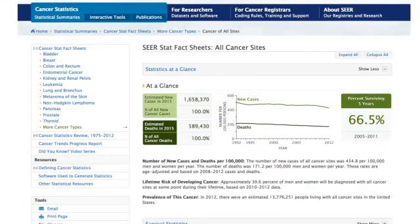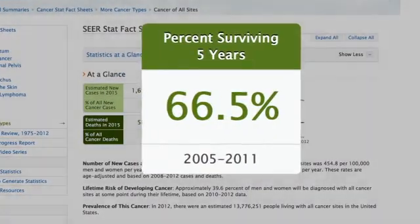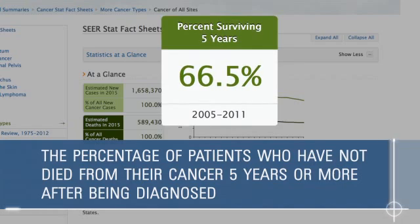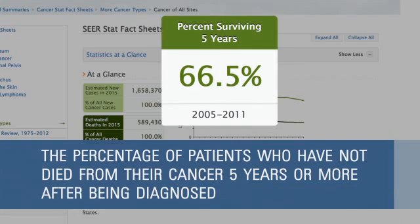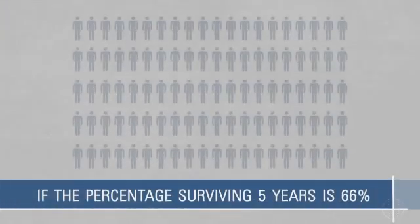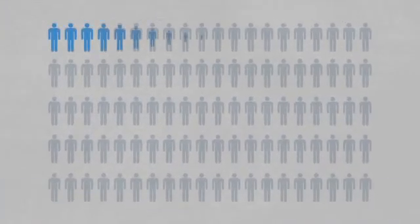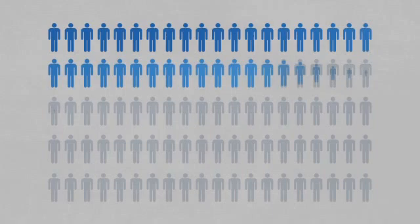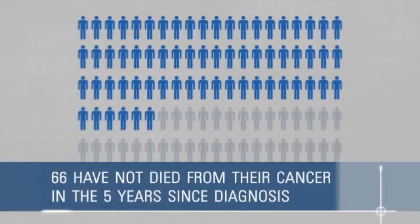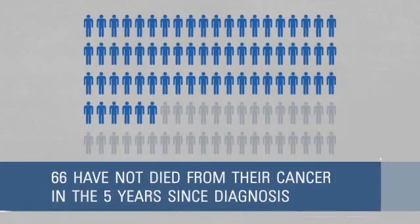Five-year relative survival is the percentage of patients who have not died from their cancer five years or more after being diagnosed. If the percent surviving five years is 66, this means that out of every 100 people who were diagnosed with this cancer, 66 have not died from their cancer in the five years since diagnosis.